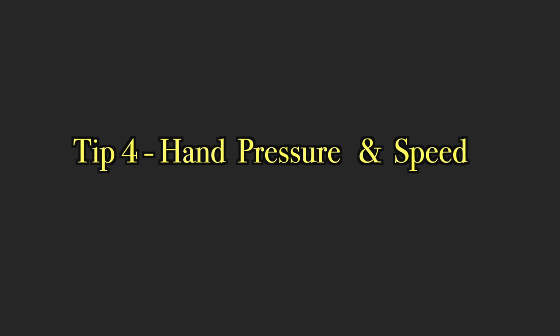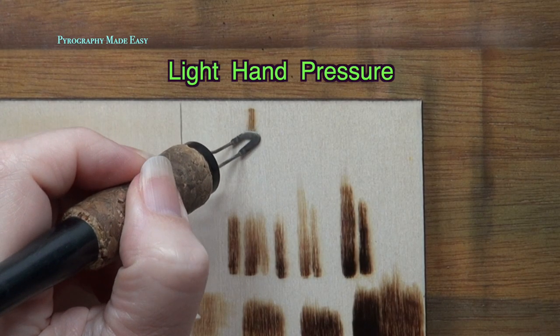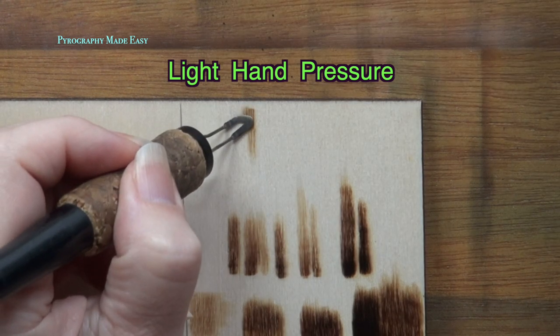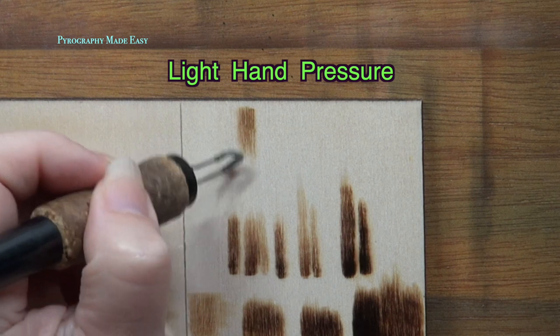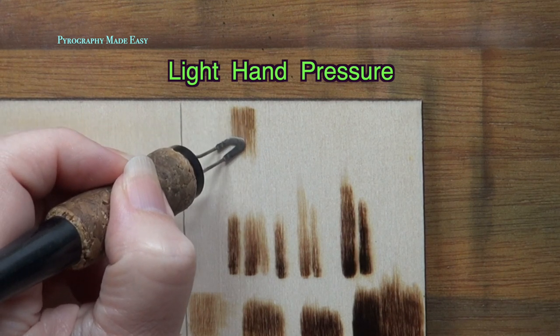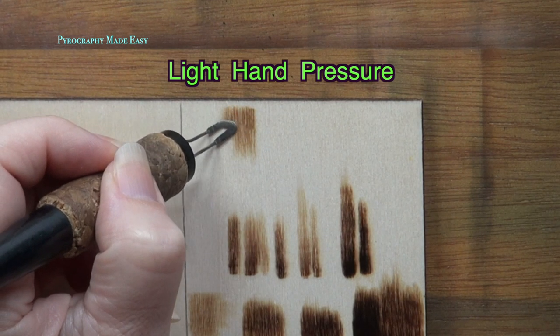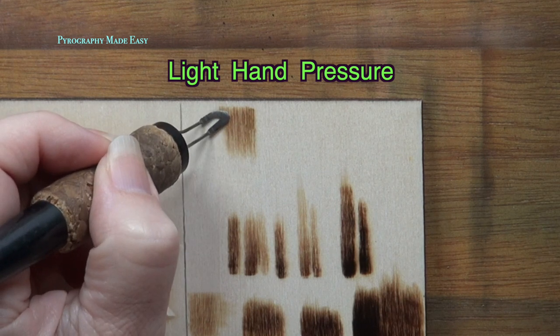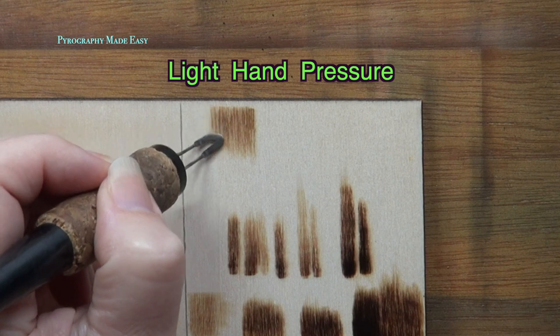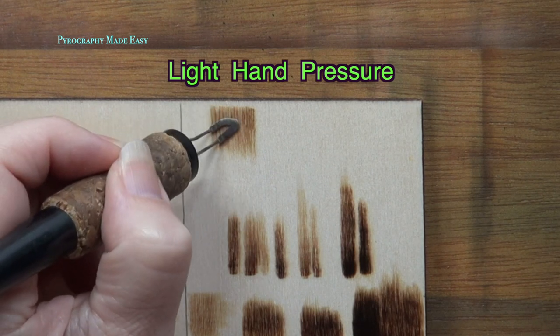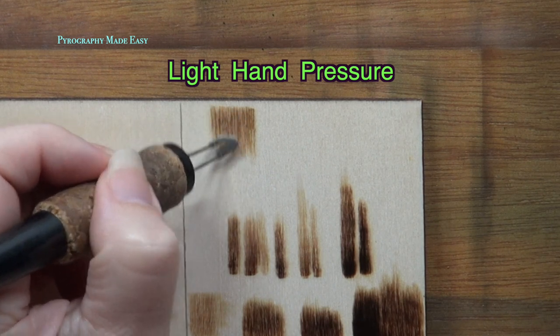Tip 4, hand pressure and speed. Use a light hand pressure when burning. Keep the pressure consistent or steady throughout the entire burn. Also, move your hand at the same speed throughout the entire burn. Doing both of these things will allow the heat to remain steady and produce more consistent burn results.